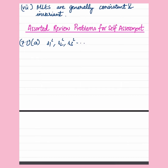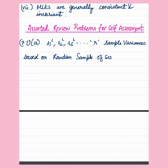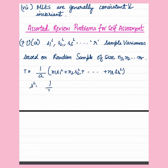Question 17.1A. We have been given S1 square, S2 square and so on as our sample variances based on random samples of sizes N1, N2 and so on till NR respectively. T is taken to be some statistic defined as 1 upon A times the quantity N1·S1² plus N2·S2² and so on plus NR·SR². We need to estimate sigma squared, and S² is defined as 1 upon N times summation of (Xi minus X-bar) squared.